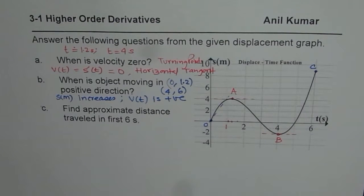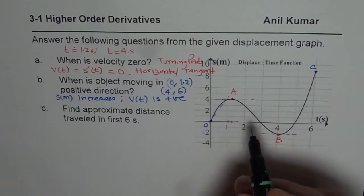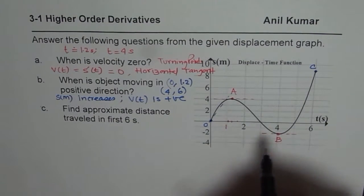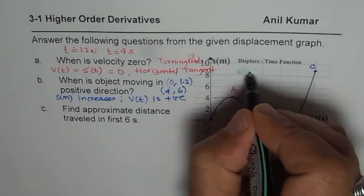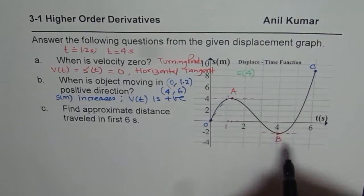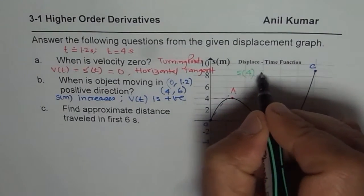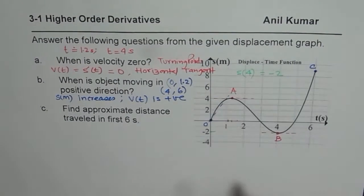Now let us see the part C which is find approximate distance travelled in first 6 seconds. Now this is very interesting. You can see what is displacement S at 4. Can you tell me? What is displacement at 4? It is minus 2. Do you see? It is minus 2. That is displacement.